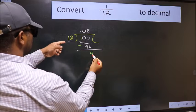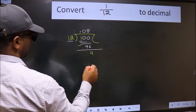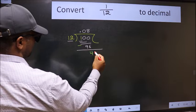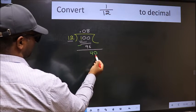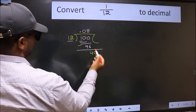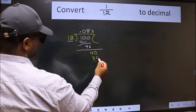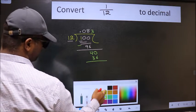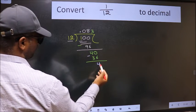Now 4 is smaller than 12, and we already have the decimal, so directly take 0. So we have 40. A number close to 40 in the 12 times table is 12 × 3 = 36. We subtract and we get 4.